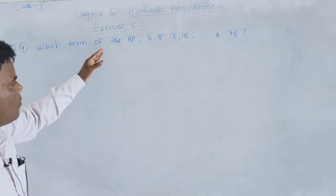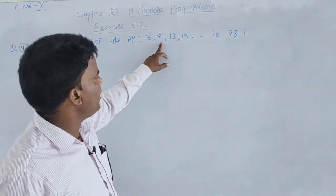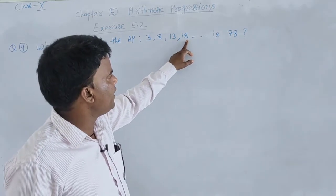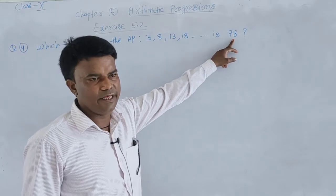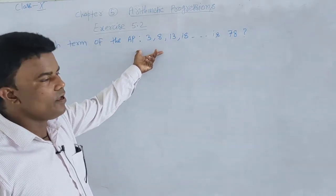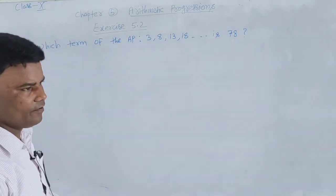Which term of the AP: 3, 8, 13, 18 and so on is 78? We need to find the value of n.